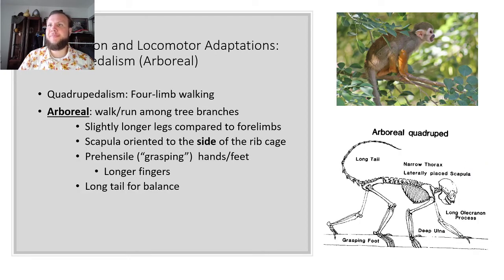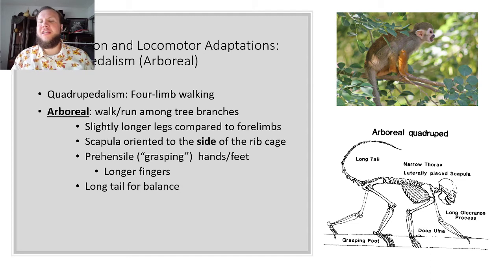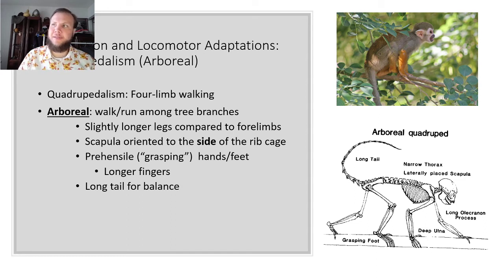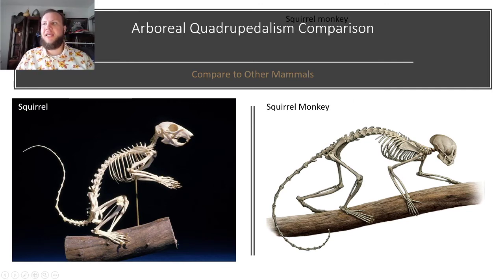Next is quadrupedalism — forelimb walking. First, arboreal quadrupedalism: they walk and run among tree branches. They have slightly longer legs compared to forelimbs and the scapula is oriented to the side — like if you look at a dog, their shoulders are on the side of the body, not on the back like ours. They also have prehensile grasping hands and feet with longer fingers and a long tail for balance, though the tail is usually not prehensile. A squirrel and squirrel monkey show very similar morphology with the scapula to the side.